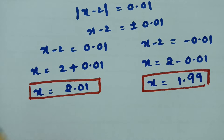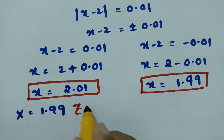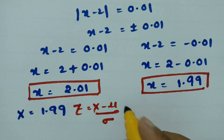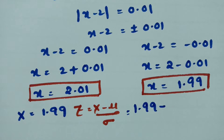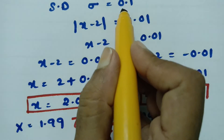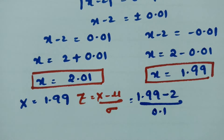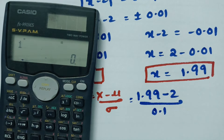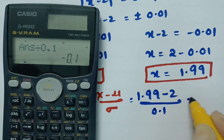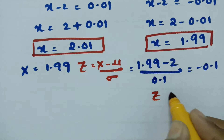When x is equal to 1.99, what will be the z value? z equals x minus mu divided by sigma. So z equals 1.99 minus 2 divided by 0.1, which gives minus 0.01 divided by 0.1. We get the value of z as minus 0.1.